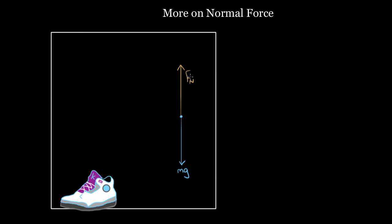Here's another misconception: people think the normal force is always equal to mg, because it's equal to mg in so many different scenarios that people just want to say it's always equal to mg. It's just like a reaction — people see normal force and they automatically replace it with mg. That'll be true in this simple case, but I'll show you how that's not going to be true, and what you do if it's not true.